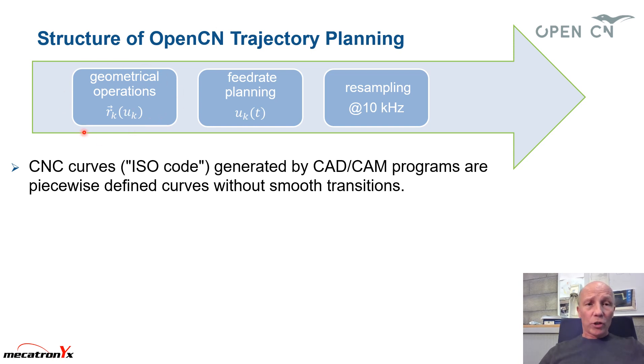All the operations here are purely geometrical and it's followed by time domain operations where we would like to have the dependency of U with respect to T, the time. At the end, we are composing both functions. So the R is depending on U, which is depending on T, and we are resampling it at, for example, 10 kilohertz, which gives the set point values for the different drives.